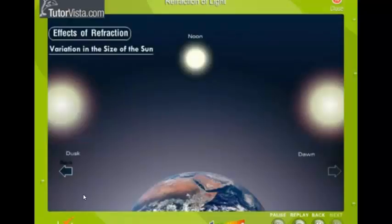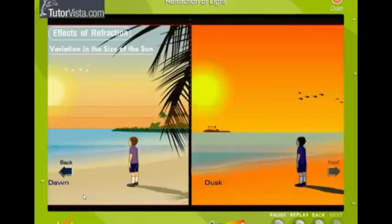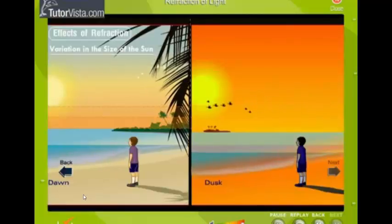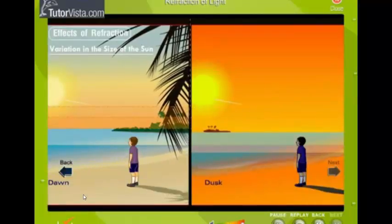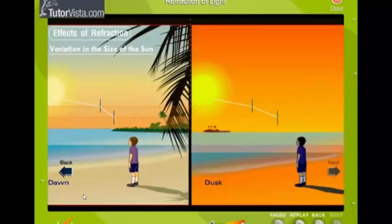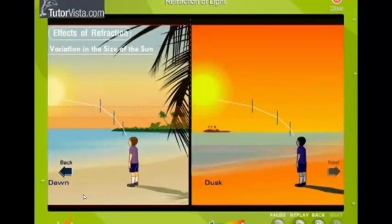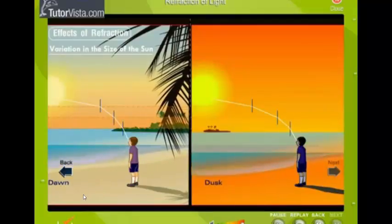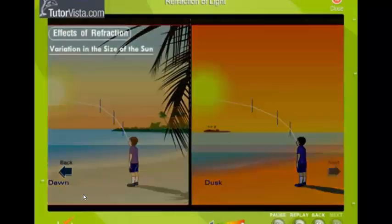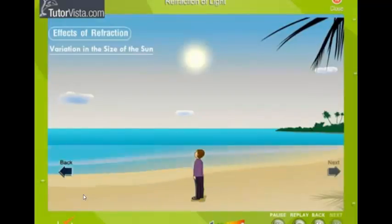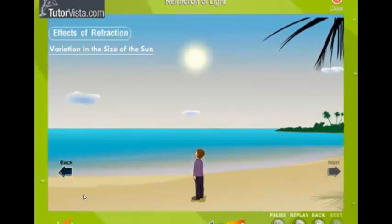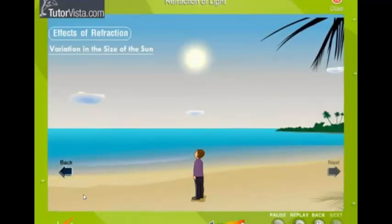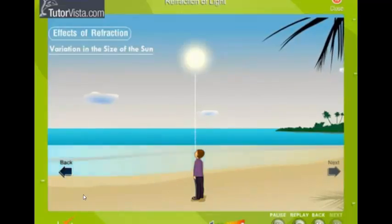At dusk or dawn, the sun appears to be larger than at noon. This is because when the sun is near the horizon, the rays of light coming from the sun have to pass through layers of air of increasing density. Due to continuous bending of light, the sun appears to be larger. At noon, the sun appears to be smaller than at dusk or dawn. This is because the rays of light that fall normally on the surface of the earth do not get refracted.